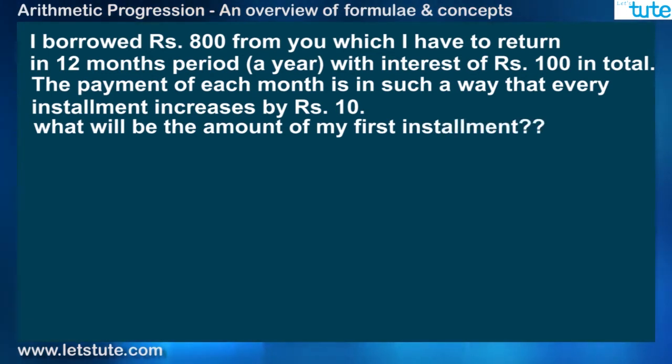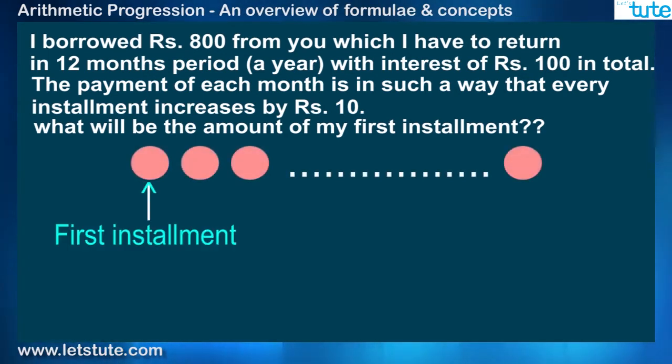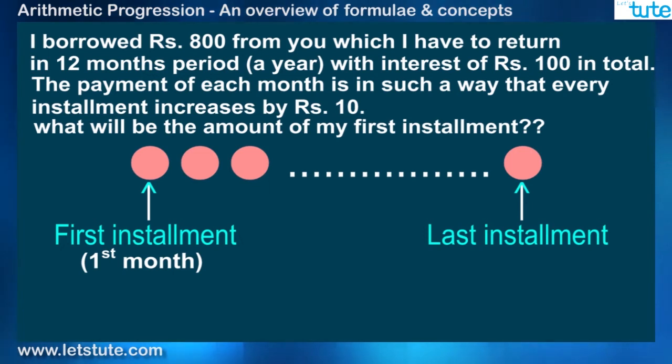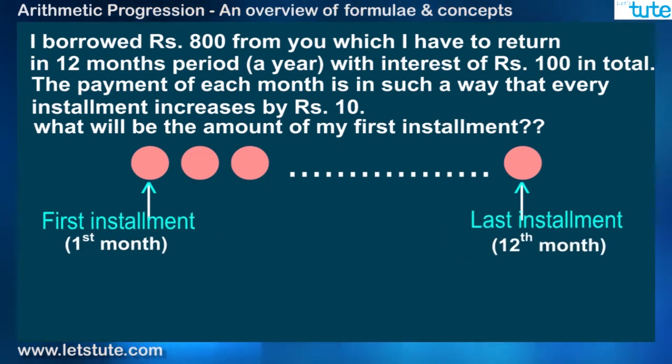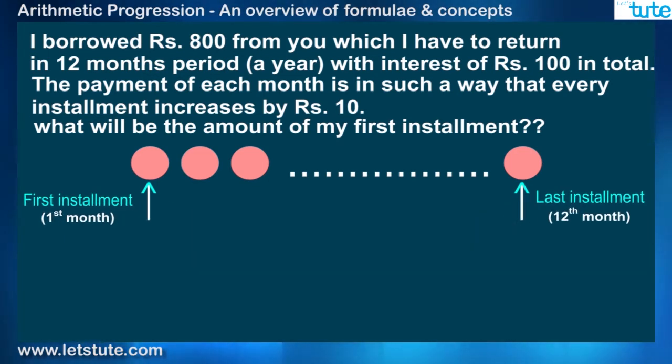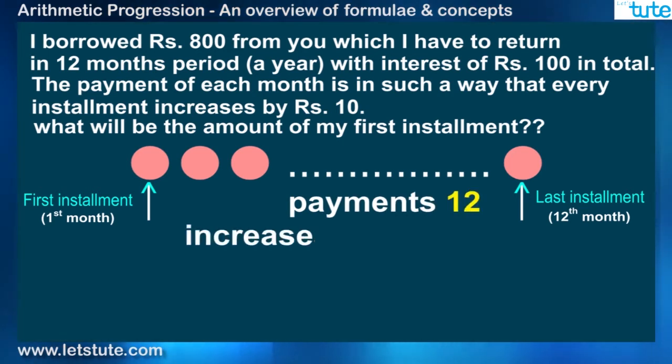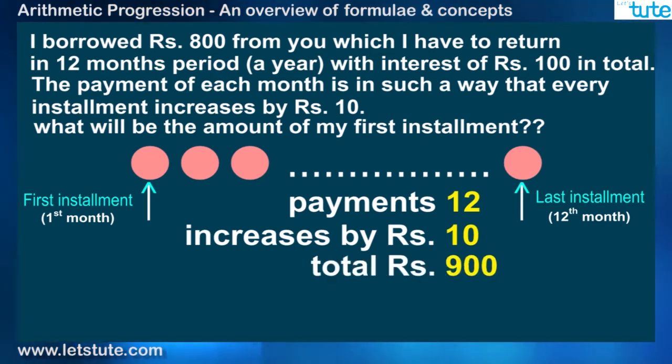Now this is something that I would write on my rough page to get the idea about all this. Okay, so the first bubble is my first installment, that is first month, and the last installment, that is in the 12th month. Now this means I have to make 12 payments, which increases by Rs. 10 each month. And all this must total up to 900.